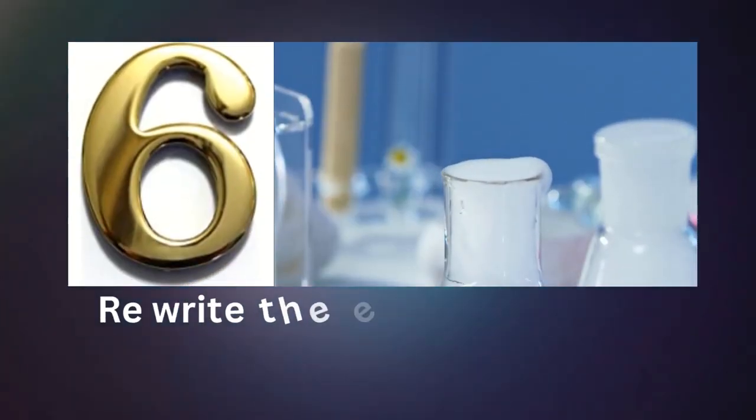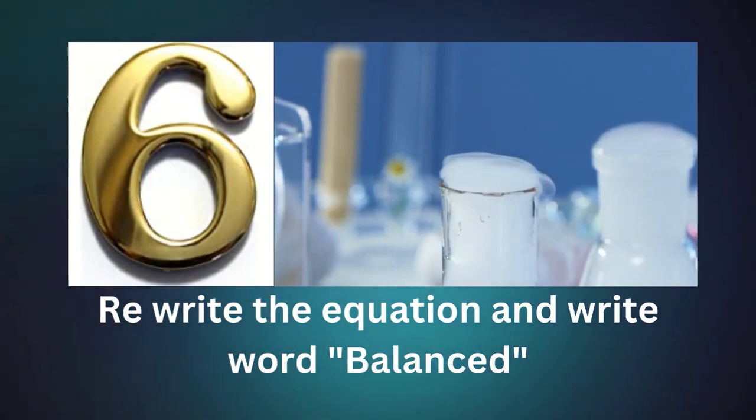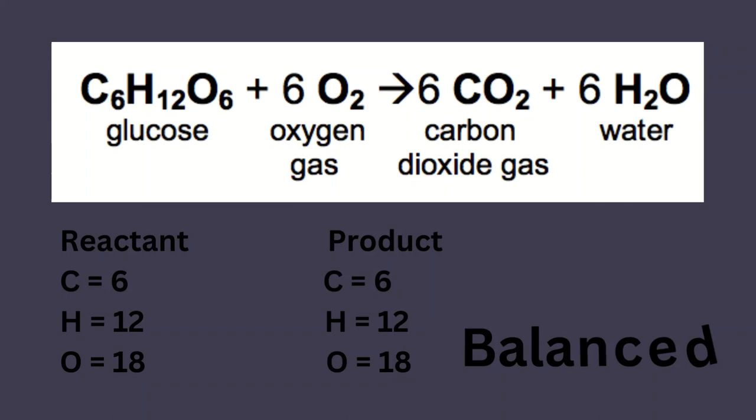Step number six. Rewrite the equation and write word balanced. In reactant C equals six, H equals twelve, and O equals eighteen number of elements, whereas in product C equals six, H equals twelve, and O equals eighteen, same number of elements. Therefore it's balanced.